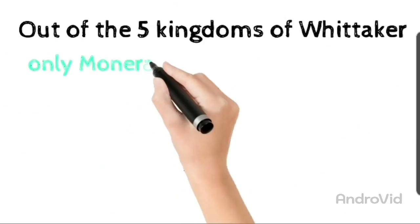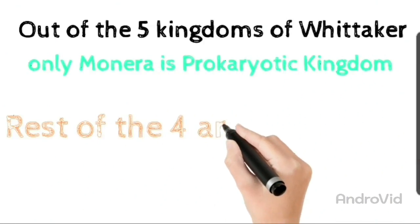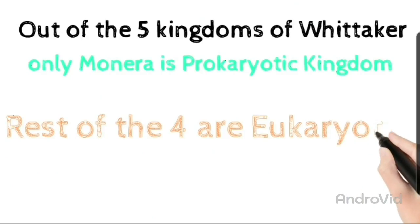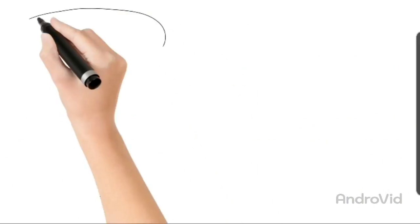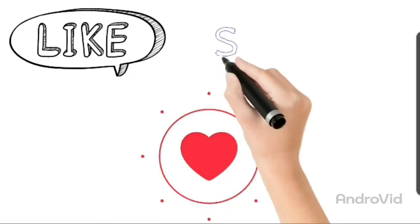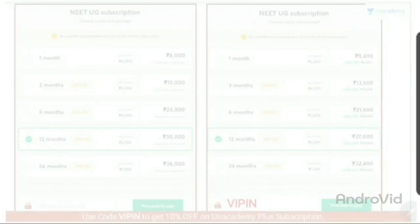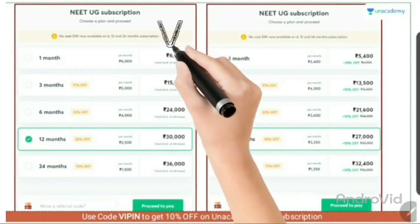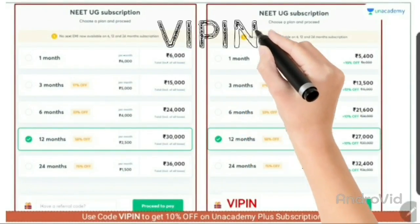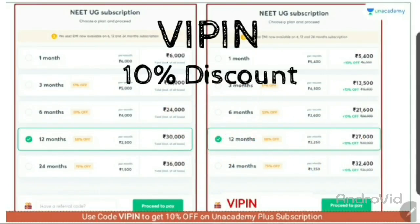So, out of the five kingdoms given by Whittaker, आपकी सिर्फ Monera में prokaryotic organisms आते हैं, वो prokaryotic unicellular organisms का kingdom है and other than that चारों जो kingdoms हैं आपकी eukaryotic होती हैं. So if you really got this concept then you can like our video, you can share this video with your friends and you can subscribe to our channel Neet UG in 10. And if you want to take Unacademy's plus subscription, you can use the code VIPIN to get instant 10% discount on all your subscriptions. Thank you so much guys, lots of love to you all.